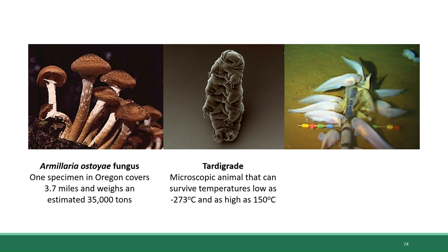Another example is the tardigrade, also known as the water bear. These are microscopic animals whose incredible hardiness to extreme conditions has been well documented. They can survive in temperatures as low as minus 273 degrees Celsius and as high as 150 degrees Celsius.